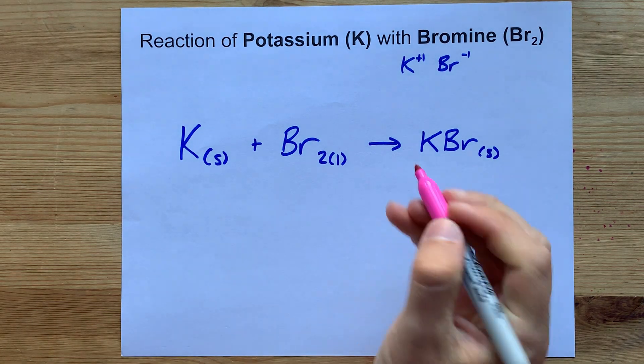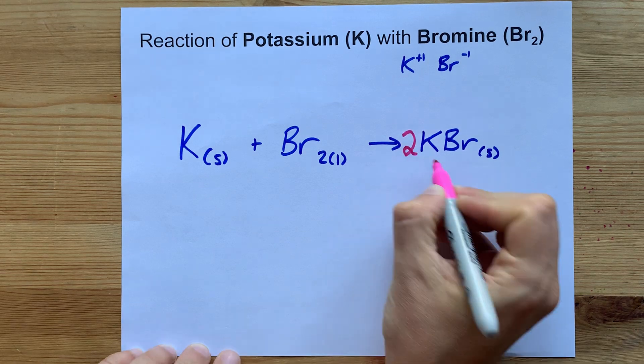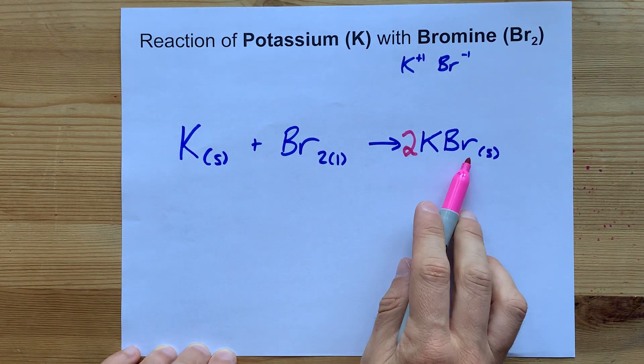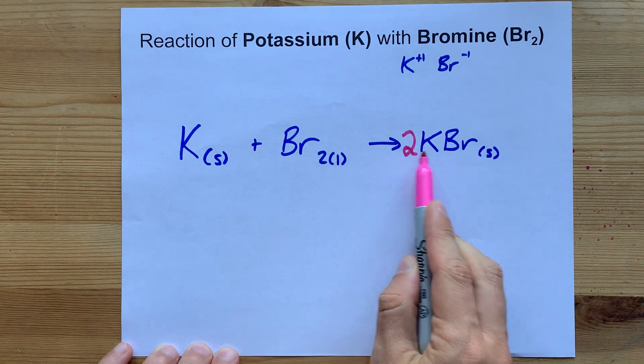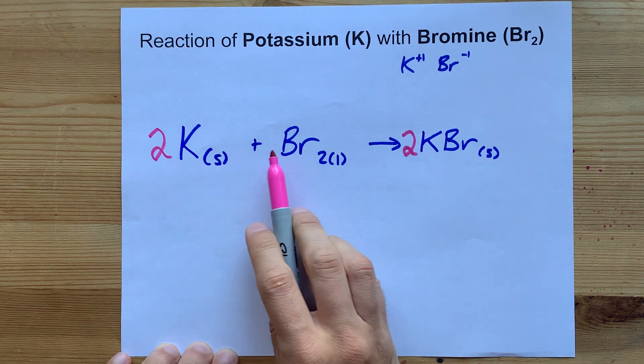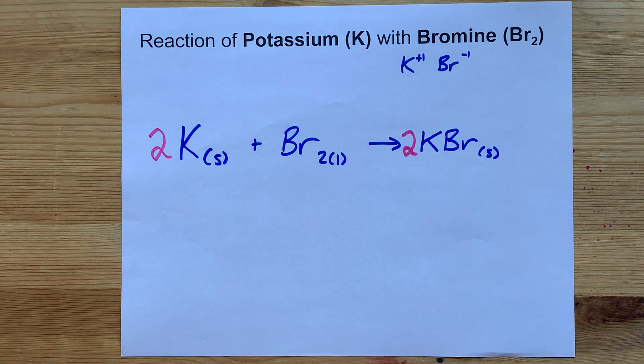Two bromines on the left mean you'll need a two in front of the KBr so that there are now two bromines on the right-hand side. These two Ks mean you'll have to put a two out here. Two, one, and two will help you balance this reaction.